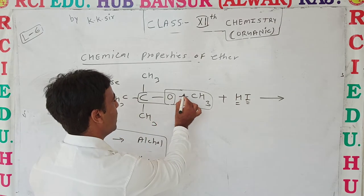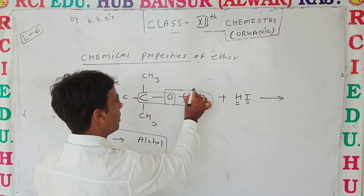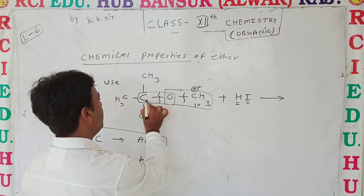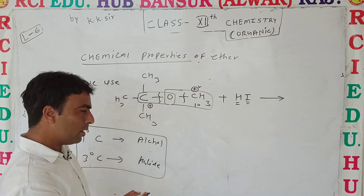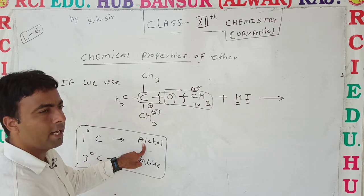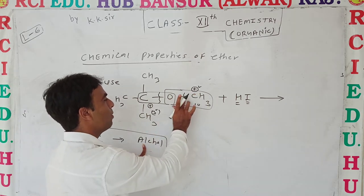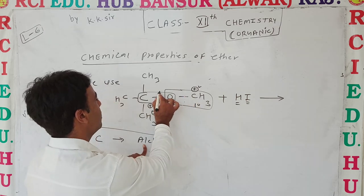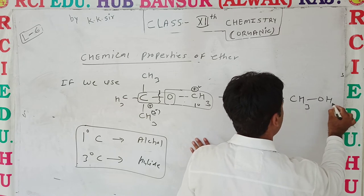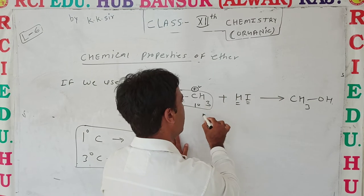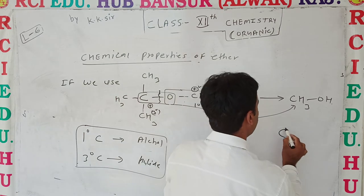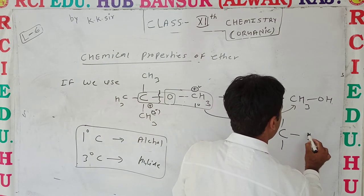If you break the bond at the 1° carbon side, a 1° carbocation forms; if broken at the 3° side, a 3° carbocation forms. Since 1° carbon forms alcohol and 3° carbon forms alkyl iodide, the 1° side gives alcohol and the 3° side gives alkyl iodide. Two types of products are formed according to the Zeisel method.